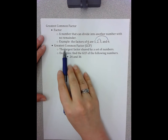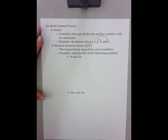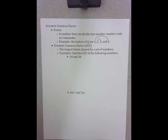So when we talk about factors, we often extend it to talking about the greatest common factor. And what that means is it's the largest factor shared by a set of numbers. It can be two numbers, three numbers, four numbers, or five numbers. In our two examples, we're going to look at just two numbers in each.